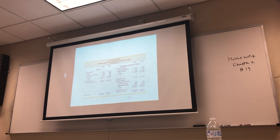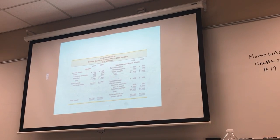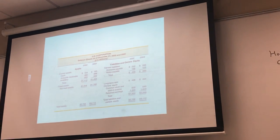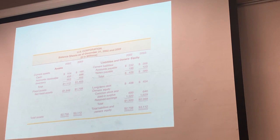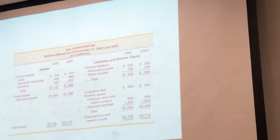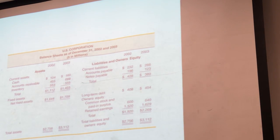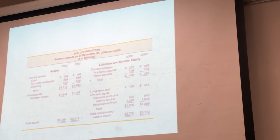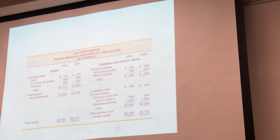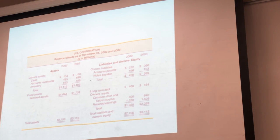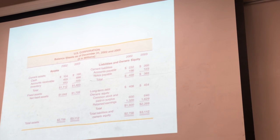When we look at the balance sheet, once it's 2002, once it's 2003, when we're pulling numbers, which one are we looking at? You want to be consistent. If it's 2002, then you take 2002 numbers all the way. If it's 2003, then you take the 2003 numbers.